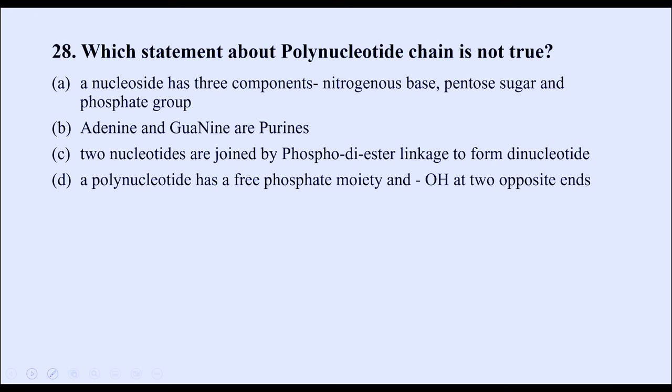Which statement about a polynucleotide chain is not true? Option A states nucleoside has three components — but nucleoside has only two components: nitrogenous bases and pentose sugar. Options B (adenine and guanine are purines), C (two nucleotides joined by phosphodiester linkage form dinucleotides), and D (a polynucleotide has a phosphate moiety and OH at opposite ends) are all correct. So option A is not true. The correct option is A.